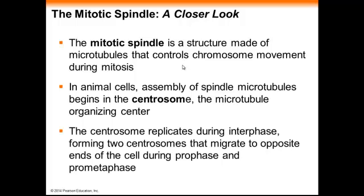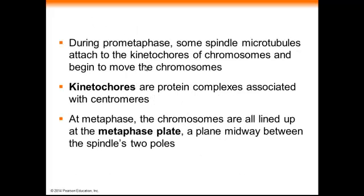The structure that carries out chromosome division during mitosis is called the mitotic spindle, which is made up of microtubules. Think of it like a fishing pole and reel — the mitotic spindle would be the reel, and the chromosomes would be the fish. In animal cells, assembly of the microtubules begins in the centrosome, which contains centrioles, and during prometaphase the spindle microtubules attach to parts of the chromosomes called kinetochores, allowing the chromosomes to move around.